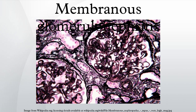By contrast, membranous proliferative glomerulonephritis has a similar name but is considered a separate condition with a distinctly different causality. Membranous proliferative glomerulonephritis involves the basement membrane and mesangium, while membranous glomerulonephritis involves the basement membrane but not the mesangium.